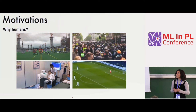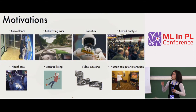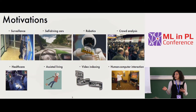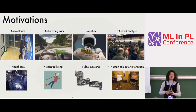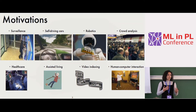Why humans? People are everywhere in our daily lives, in applications like self-driving cars or sports analysis. More and more applications include surveillance scenarios with security cameras, robotics, crowd analysis, healthcare for analyzing human interactions in surgeries, assisted living in smart homes, video indexing and searching on YouTube, and human-computer interaction like gaming.